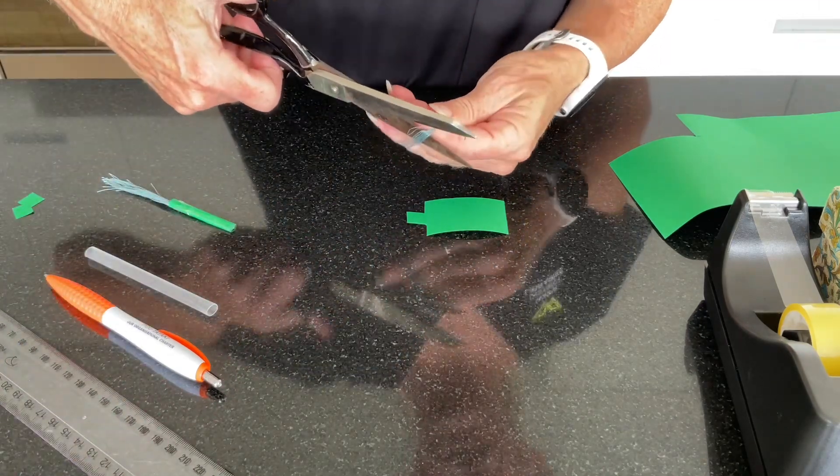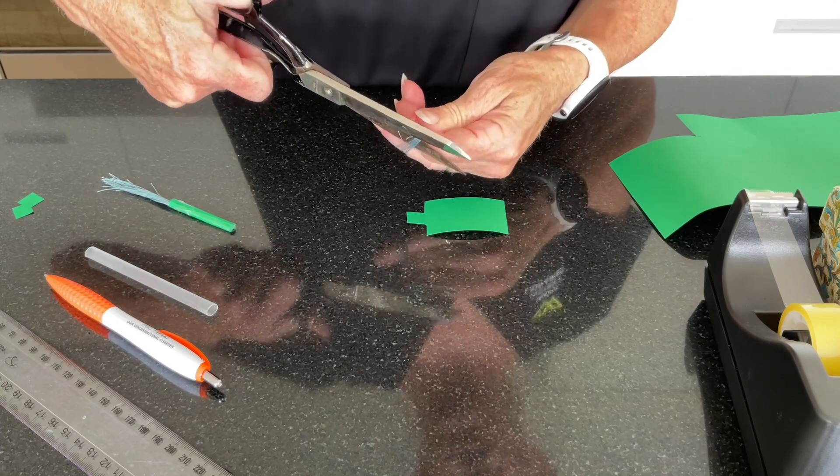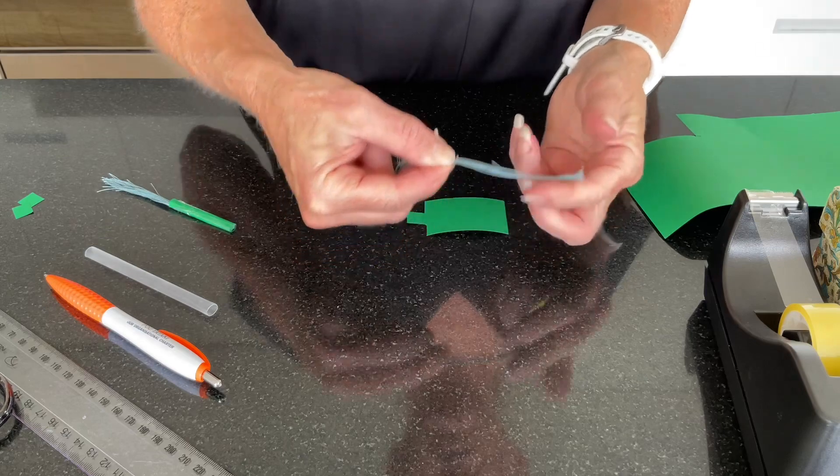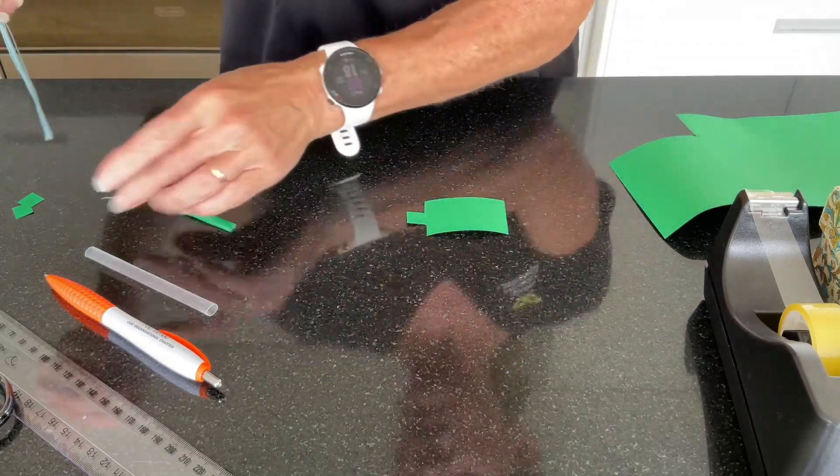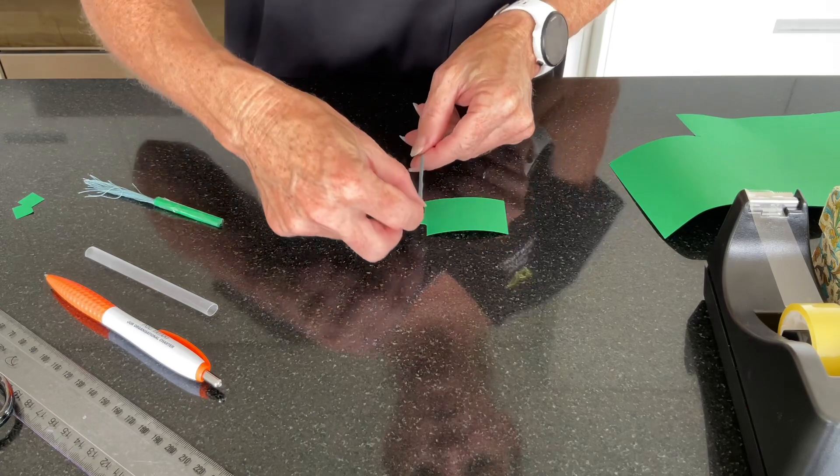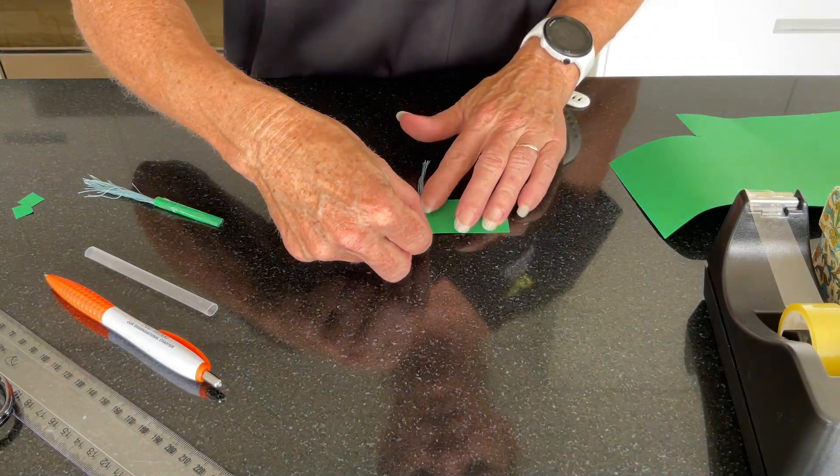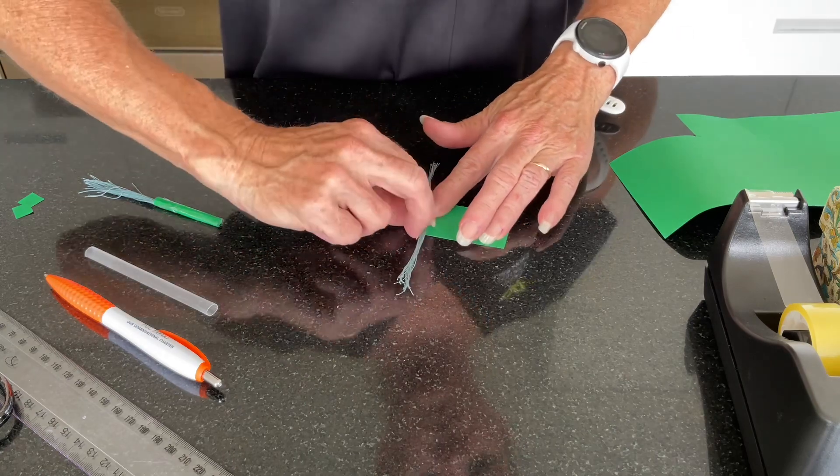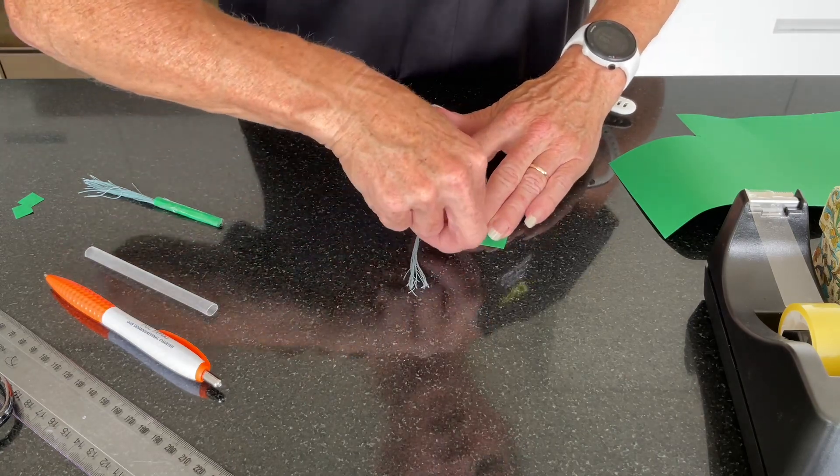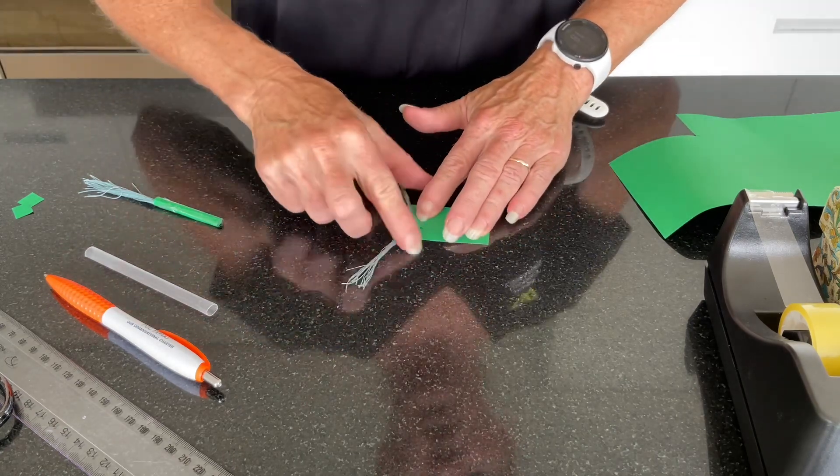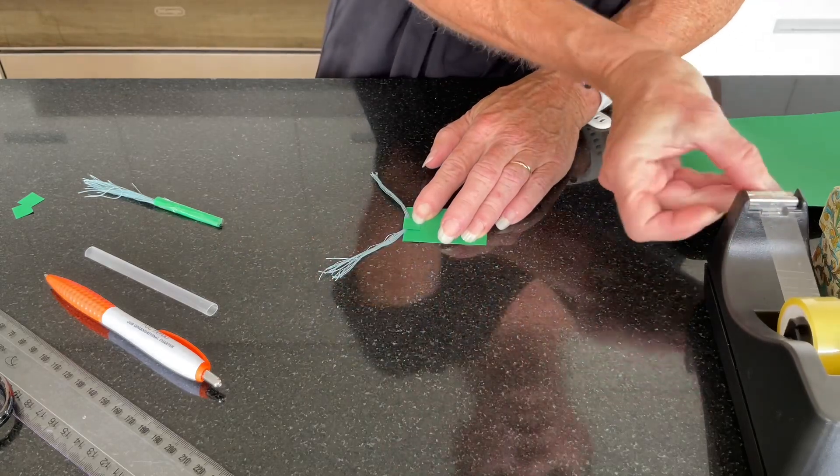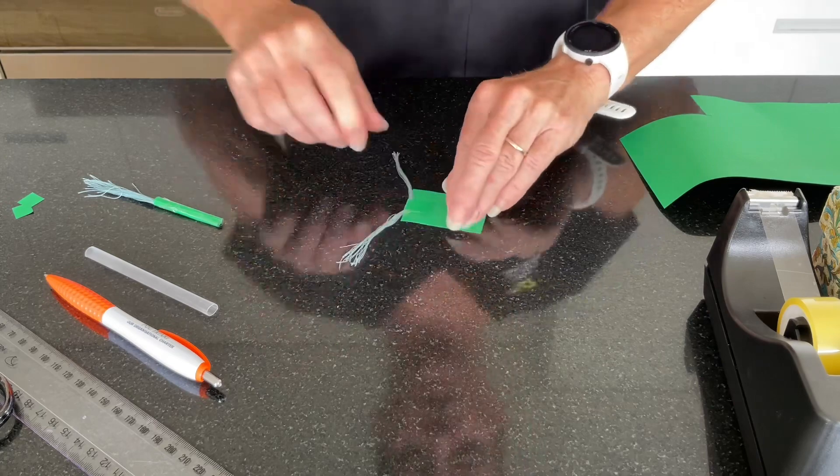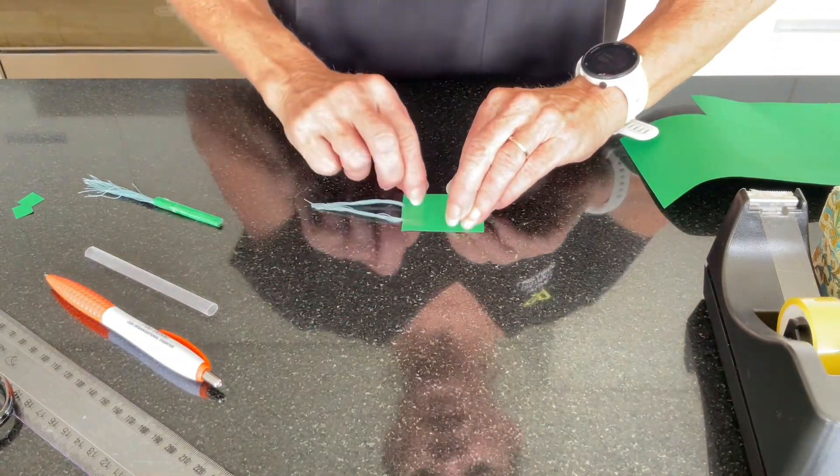Now cut the thread while it's on your hand, like so. You can discard any small pieces. Then place it like so across the tab. Fold the tab in. You can add a little piece of tape if you want to secure it. That is going to create our tail.